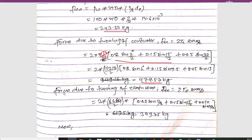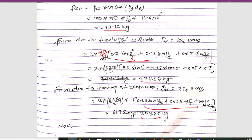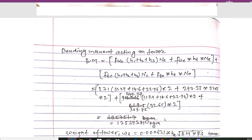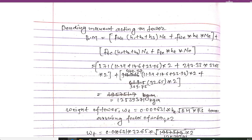Similarly, force due to turning of earth wire (FTE) is: FTE = 2TE × sin(α/2), where TE = UTS/2. Using the same tower type distribution, the calculated value is FTE = 309.75 kg.